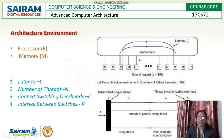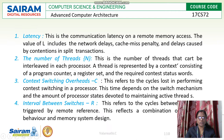Coming to the first one, architectural environment — the diagram on the right side shows a typical architecture of a multi-threaded environment. It contains multiple processes and memories. In this environment we need to focus on four important factors: latency, number of threads, context switching overheads, and interval between the switches.